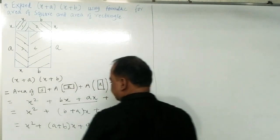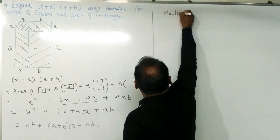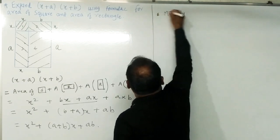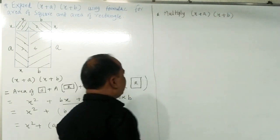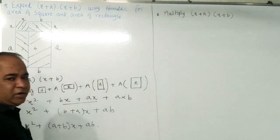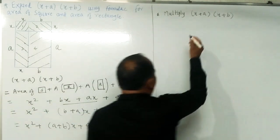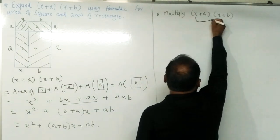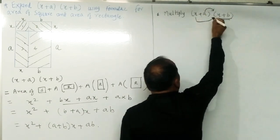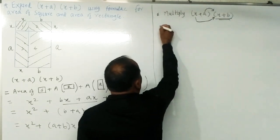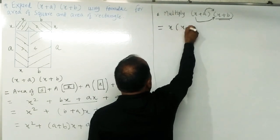Now let us derive the same formula by multiplying the binomials algebraically. To expand (x + a)(x + b), we multiply the first term of the first bracket into the second bracket, and then the second term of the first bracket into the second bracket. So we get x into (x + b).